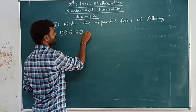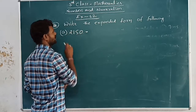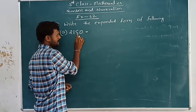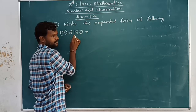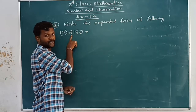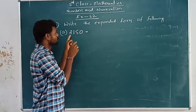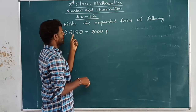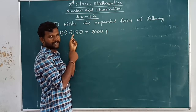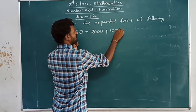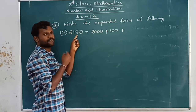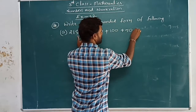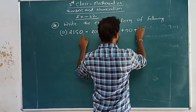But here, directly you have to write the expanded form. For 2150: zero is in ones place, five is in tens place, one is in hundreds place, two is in thousands place. So: two thousand, plus one hundred, plus fifty (five tens are fifty), plus zero.